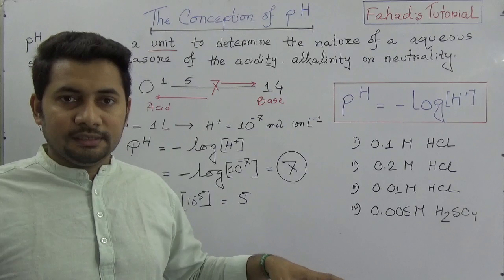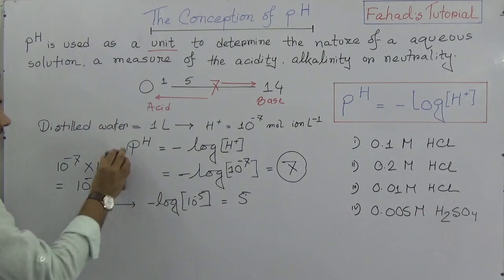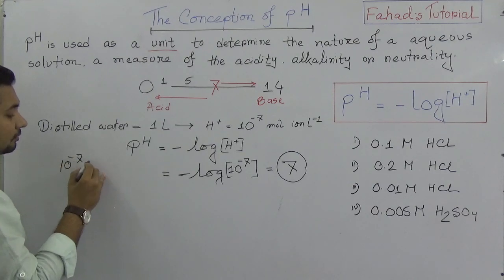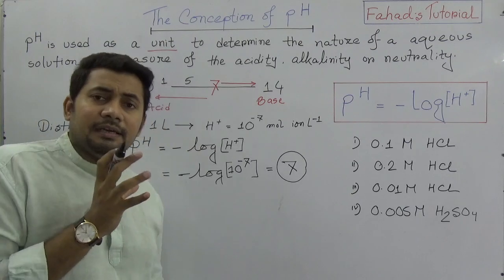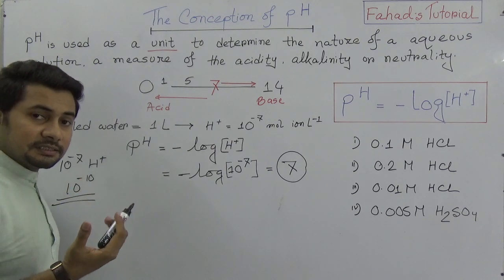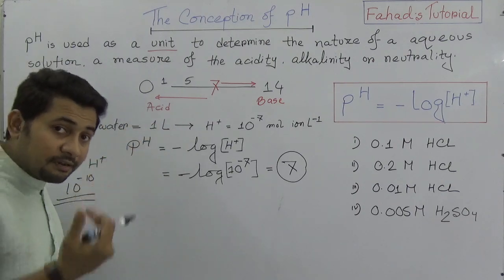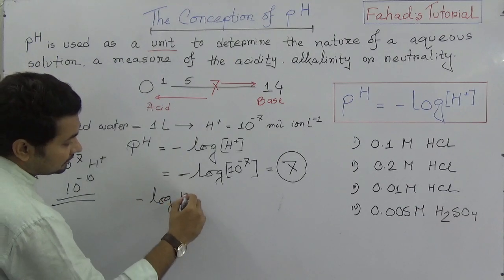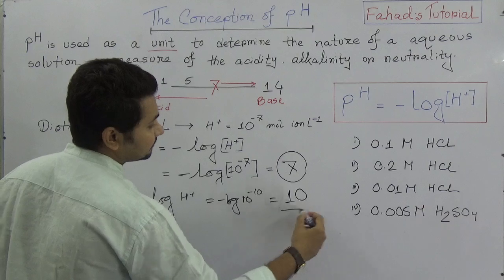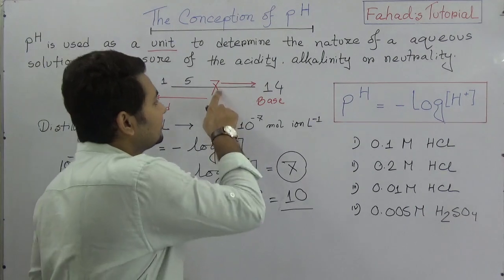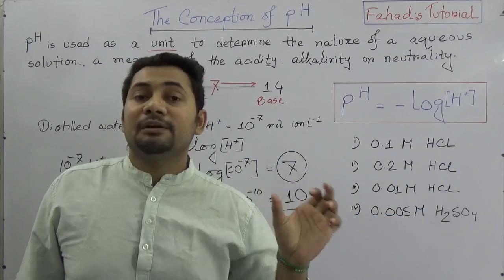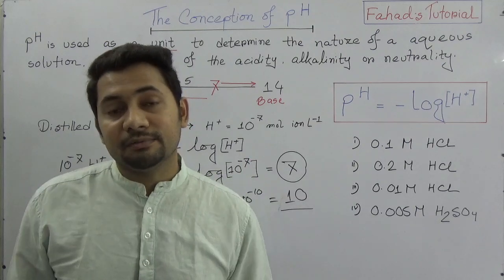If you add more hydroxyl — suppose in 1 liter distilled water there was 10⁻⁷ moles of H+ — but when you add more alkaline, it becomes 10⁻¹⁰, meaning the concentration of hydrogen drops 1000 times. Then pH equals minus log 10⁻¹⁰, which is 10. So when the pH value is 10, the solution is basic. When pH exceeds 7 going toward 14, the solution is basic. When it is 0 to 7, the solution is acidic.